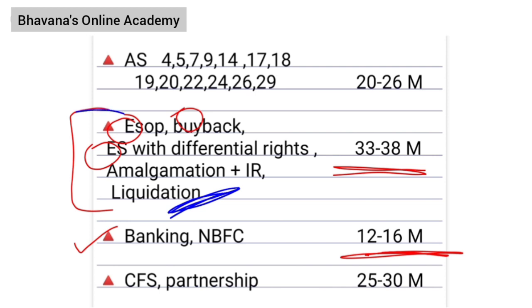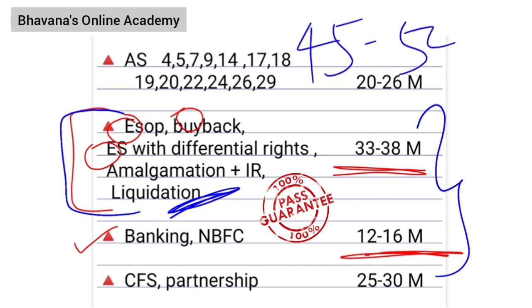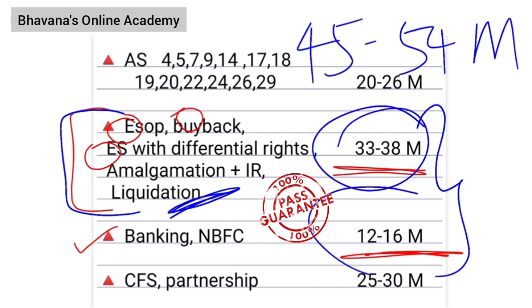After you complete banking and NBFC and this set of five chapters, your 45 to 54 marks in the exam will be secured, which means you are definitely going to pass in the exam.